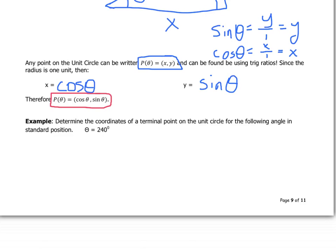So, let's look at this example. Determine the coordinates of a terminal point on the unit circle for the following angle. Theta equals 240°. Well, that point on the unit circle is the point P(240), which is going to be the cos of 240 and the sine of 240.